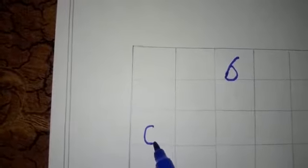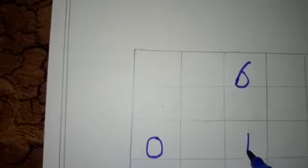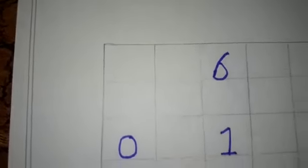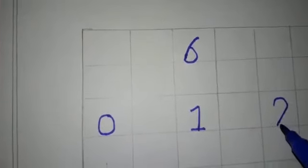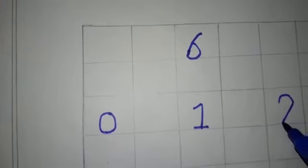Make a circle. So, this is 0. Standing line, slanting line and sleeping line. This is number 1. Make a curve, standing line, slanting line and sleeping line. This is number 2.